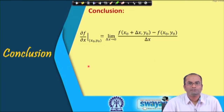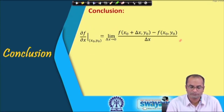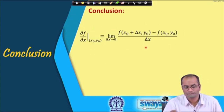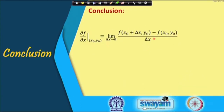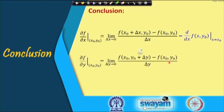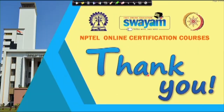So, what we have learned today — which will be used in following lectures — is partial derivatives: the definition using the limit of the increment quotient with respect to x (or y), and that if this limit exists, we call it the partial derivative with respect to that variable. These are the references used for preparing this lecture. Thank you very much.